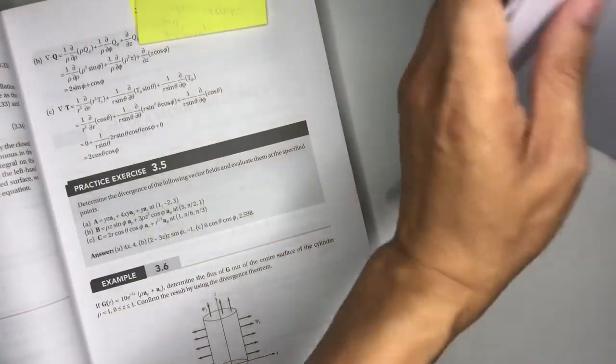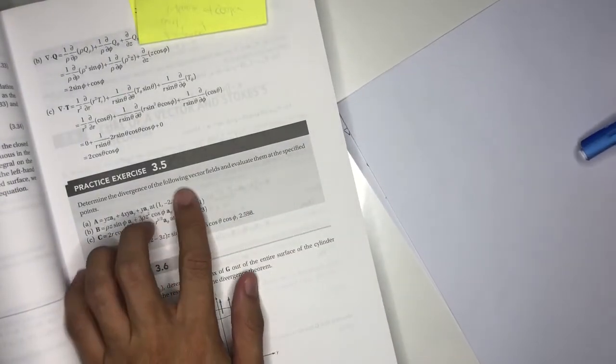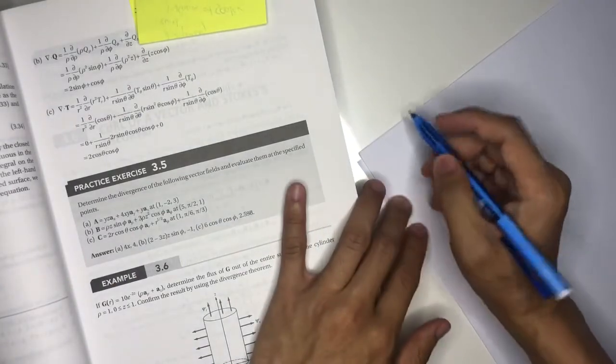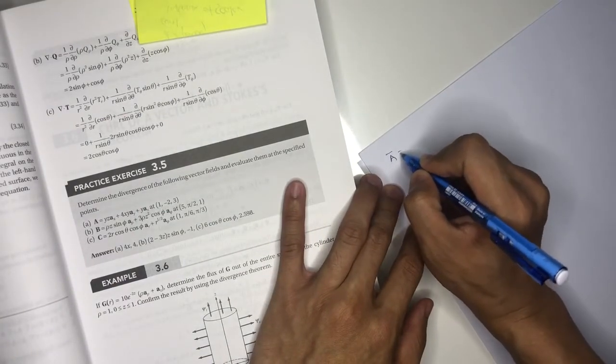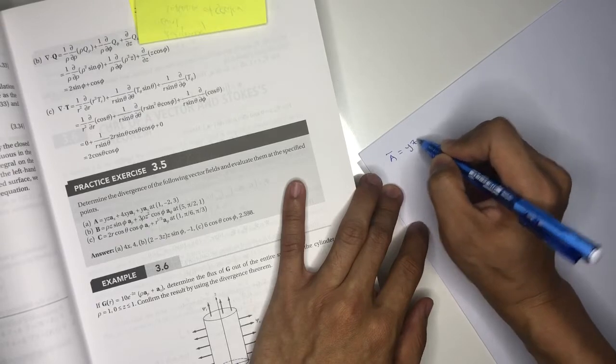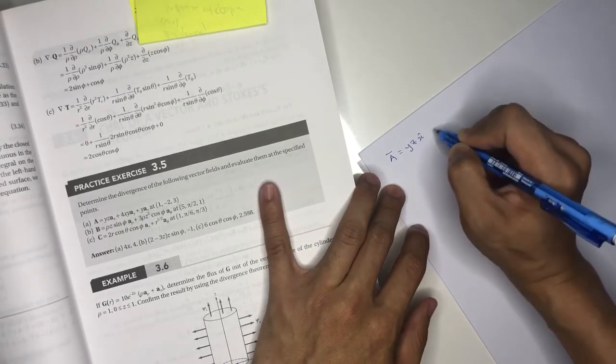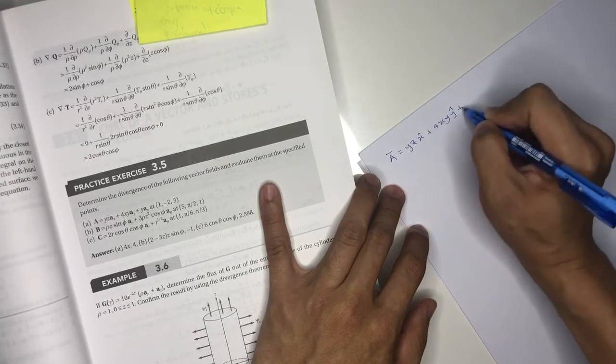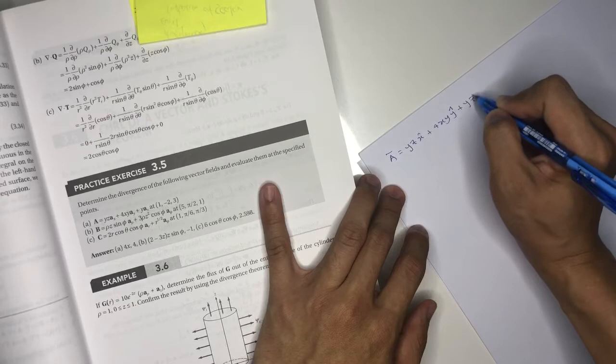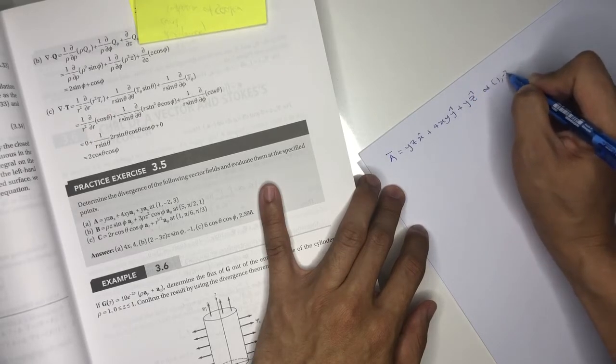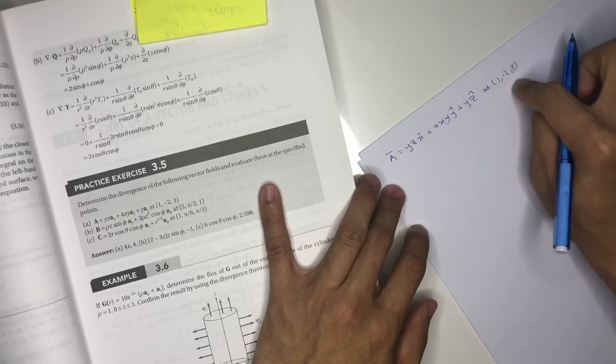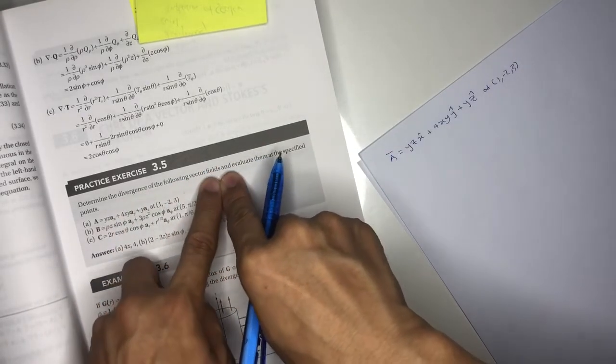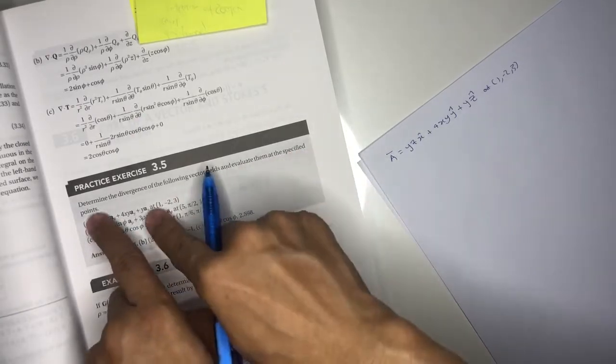You can read here and we go directly to the question. Determine the divergence of the following vector field and evaluate at the specified point. Here, they give us vector A, which is yz in the x direction, plus 4xy in the y direction, plus z in the z direction, at point (1, -2, 3).